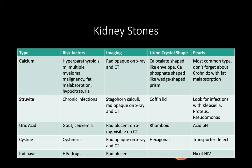Cysteine stones are uncommon, about 1–2% of cases. This is usually an autosomal recessive genetic condition resulting in cystinuria due to a defective cysteine transporter. They are mildly radiopaque on X-ray and CT and hexagonal in shape. Indinavir stones are very important because they are not visible on X-ray or CT. They're related to HIV drugs — indinavir is an HIV drug — so look for a history of HIV in the clinical vignette.